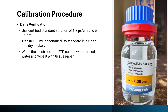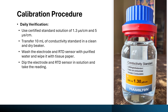Wash the electrode and RTD sensor with purified water and wipe with tissue paper. Then dip the electrode and RTD sensor into the 1.3 microsiemens per centimeter solution in the clean and dry beaker and take the reading. You can also take the reading for the 5 microsiemens per centimeter solution in the same way. The acceptance criteria for the reading should be plus or minus 0.2 microsiemens per centimeter.